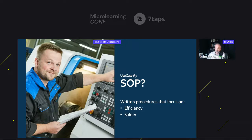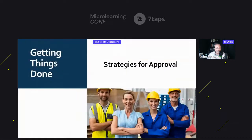Before I move on to the last section, I did want to talk about getting things done — this is really important in organizations. I've worked in organizations where budgets sometimes weren't very good, and sometimes there were obstacles to getting things approved. Through 18 years of doing this, I've found there are some strategies that can help us get approval.